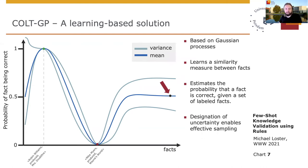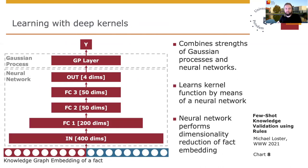For example, it may make more sense to present the model with a data point where its uncertainty is quite high rather than a data point where the model is very confident in its predictions. To circumvent traditional limitations of Gaussian processes, we leverage deep kernel learning, which combines the strength of Gaussian processes and neural networks in one unified model. The model consists of two main components: a fully connected neural network and a Gaussian process layer. The neural network effectively performs a dimensionality reduction, transforming the n-dimensional fact representations into a low-dimensional vector representation, which the Gaussian process layer then receives as input to yield the final prediction.